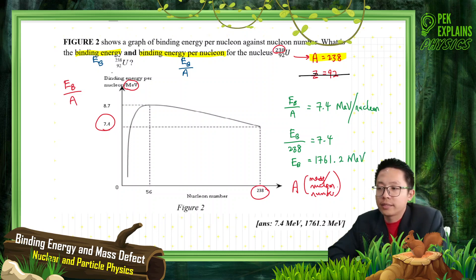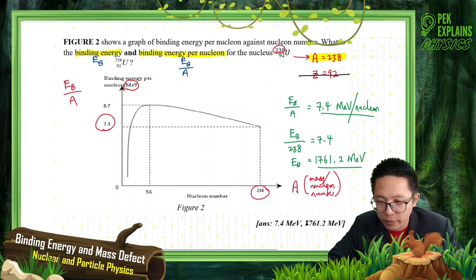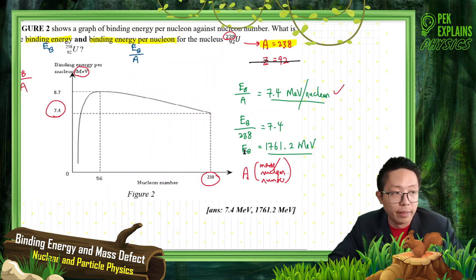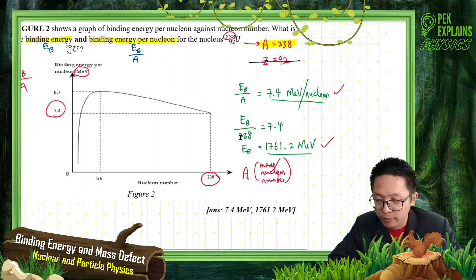That's the answer. That's the answer for binding energy per nucleon. Is it correct? 7.4 MeV? Yes, that's correct. And how about my binding energy? Binding energy 1761.2 MeV. That's correct. Just, you know, this one 238 multiply to the top 7.4, you get this one.